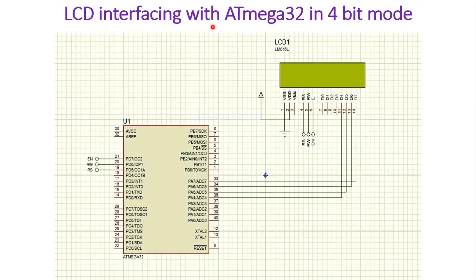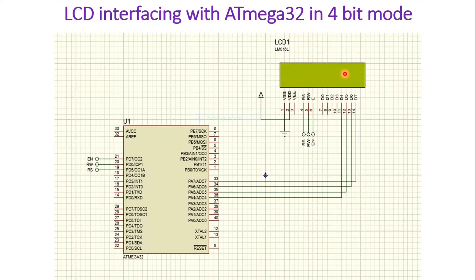Now let us discuss LCD interfacing with ATmega32 in 4-bit mode using Proteus simulation. The VSS pin is connected to ground and VDD is connected to 5V supply. The VE pin is not connected in simulation, but when connecting a real LCD with ATmega32 you must connect a potentiometer to this pin to adjust contrast — otherwise you cannot see anything on the LCD.